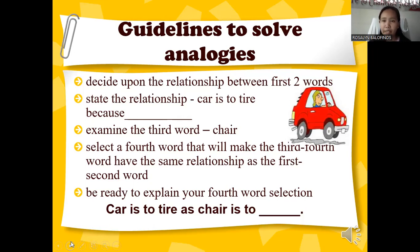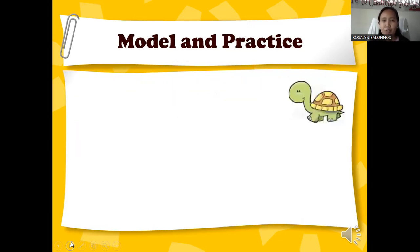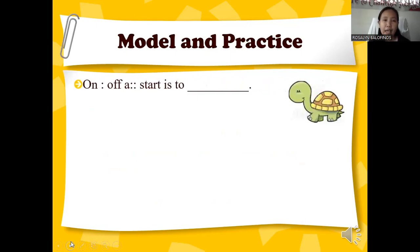For example: 'car is to tire as chair is to blank.' Since a tire is a part of a car, what part of a chair serves the same role? The answer would be 'legs.' If that was your answer, you are correct!